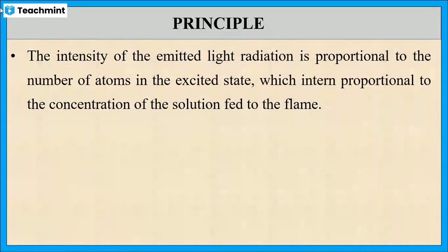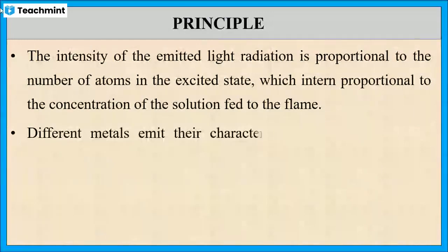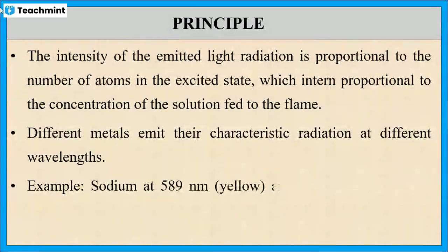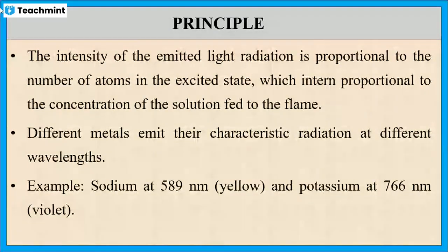But the emitted radiation of different metals are not same, they are different for different metals. For example, sodium emits radiation at 589 nanometer and potassium at 766 nanometer.